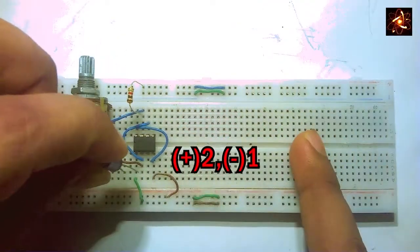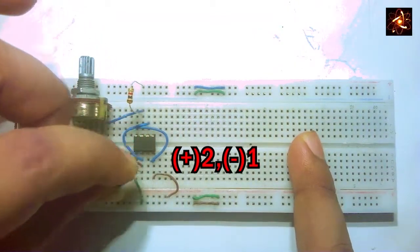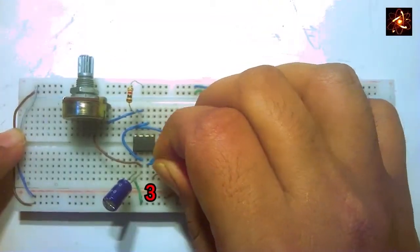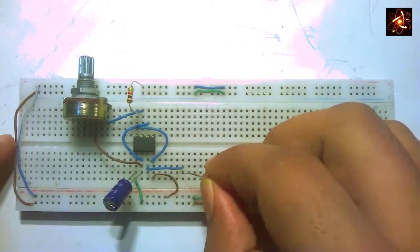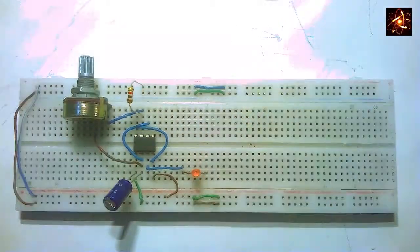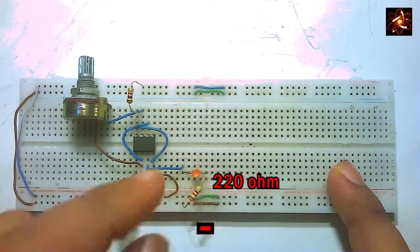The positive terminal of the capacitor is connecting in pin number 2 and the negative terminal is connecting in pin number 1. Pin number 3 is the output pin which is connected with a wire. The positive terminal of LED is connecting in pin number 3. Now ground the LED with a 220 ohm resistor.